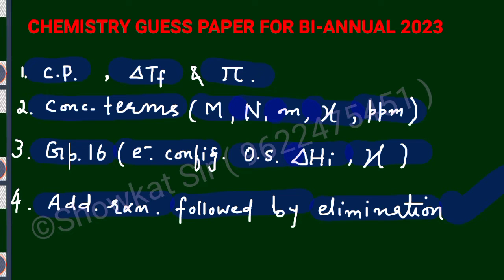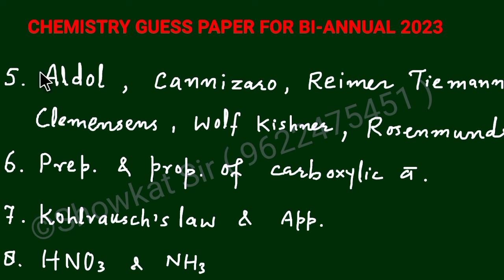Then if we will move next, you will study here aldol reaction, aldol condensation, then there is cross aldol reaction, similarly the Cannizaro reaction, there is cross Cannizaro reaction, and similarly a Reimer-Tiemann reaction. This is very important. Clemensen's reduction, there is Wolf-Kishner reduction, there is Rosenmund's. These are few important reactions from aldehydes, ketones, and carboxylic acid. And then you should also study the preparation and properties of carboxylic acids.